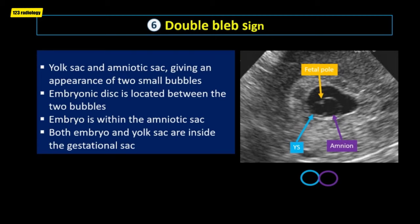The double bleb sign is a sonographic feature where there is visualization of a gestational sac containing a yolk sac and amniotic sac, giving an appearance of two small bubbles. The embryonic disc is located between the two bubbles. The embryo is within the amniotic sac, and both embryo and yolk sac are inside the gestational sac. It is an important feature of intrauterine pregnancy, differentiating it from a pseudogestational sac.